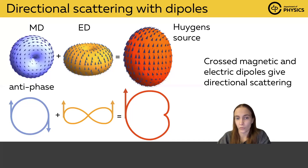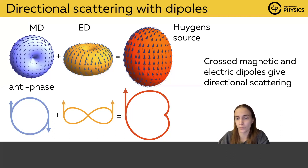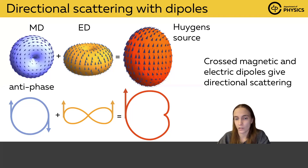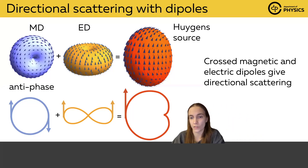If you take the sum of magnetic dipole and electric dipole but with one of them having the opposite phase — for example, putting a minus sign before the magnetic dipole — you will have the opposite situation: the same cardioid-like radiation pattern but directed in the backward direction.